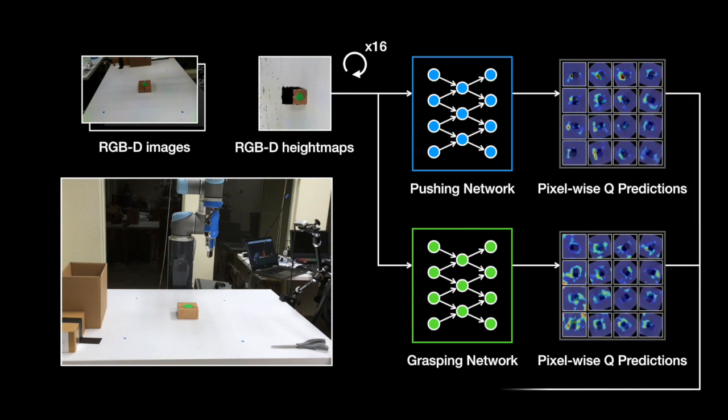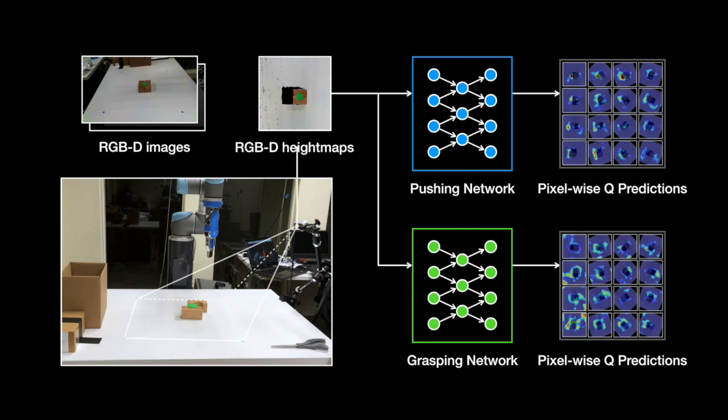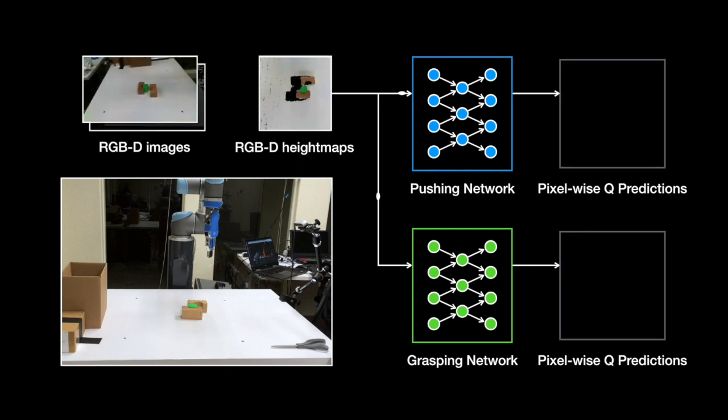The pixel and corresponding action with the highest Q value prediction is passed to the controller, which executes the respective pushing or grasping primitive on the real robot. Afterward, the camera captures images again and the process is repeated.